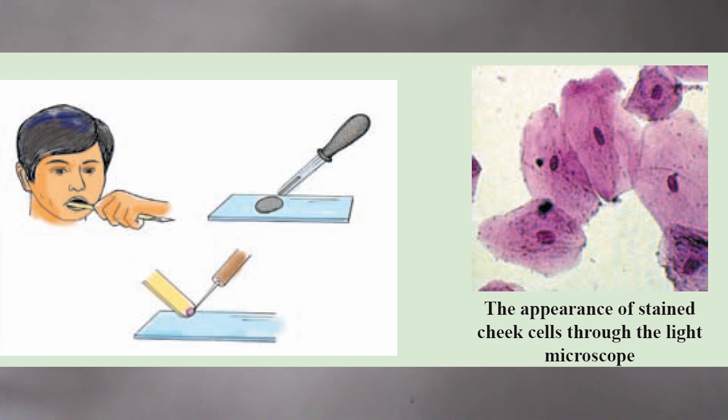When you are observing, first you have to observe it through the low power magnification, and then switch to mid power and high power magnification in the light microscope. You'll be able to see these onion epidermal cells and cheek cells as follows.